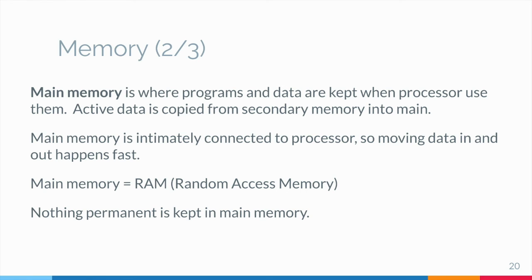Random means that the memory cells can be accessed in any order. When people say that a computer has 512 MB of RAM, they are talking about how big its main memory is. One MB of memory is enough to hold approximately 1 million (10 to the power of 6) characters of a word processing document.